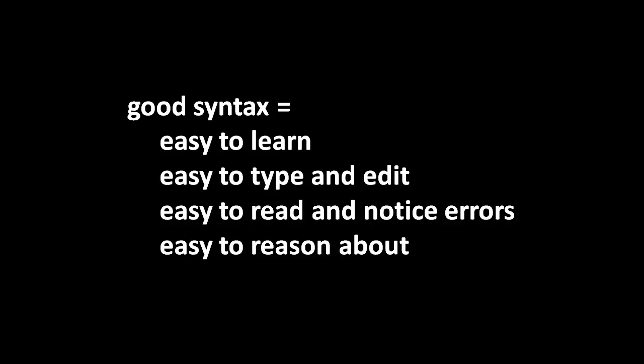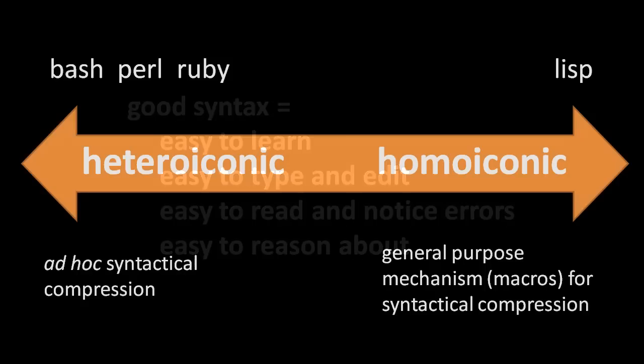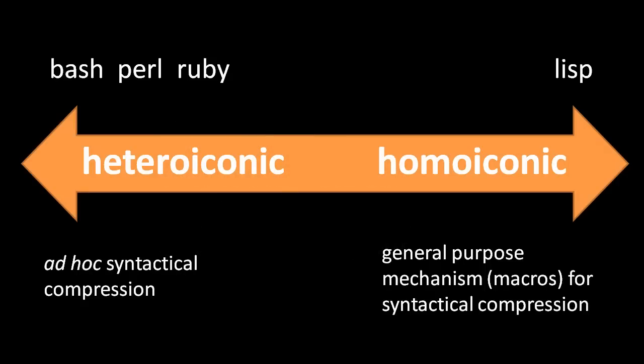When syntax is hard to reason about, the reader has to constantly account for special cases. So what's wrong especially with Bash, Perl, and Ruby? On the spectrum of all languages they fall squarely on the extreme of the heteroiconic side, whereas Lisp is at the other extreme of the homoiconic side. In heteroiconic languages, everything has its own special syntax, so when syntactical conveniences are introduced they end up being their own special cases. It's an ad hoc system of piling one syntactical convenience upon the other, and the result is a syntax that's very hard to reason about because it's full of special cases and weird interactions between different parts of the syntax.